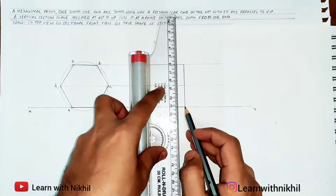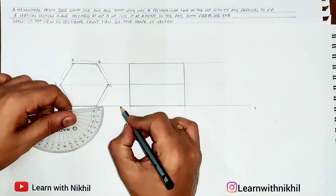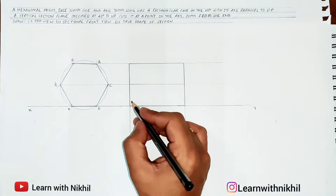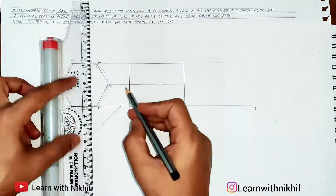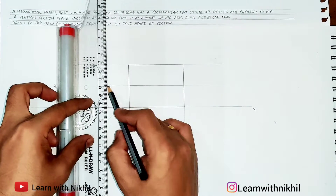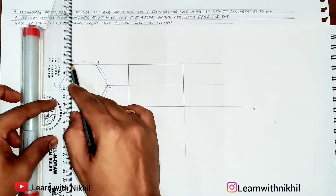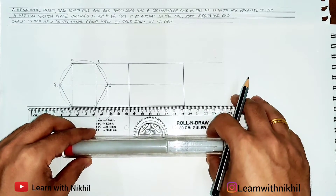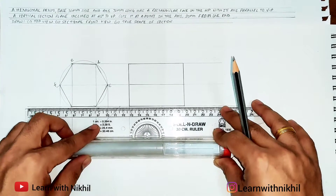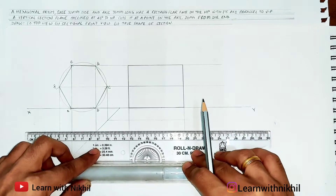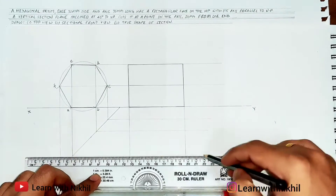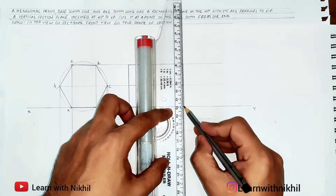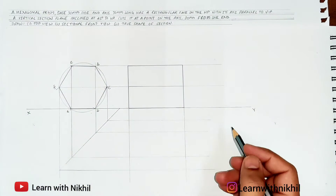Now drawing the top view: taking projections downward from the front view, and drawing a 45-degree angle line. Projections from the side view (hexagon) go to the 45-degree angle line, then from that line towards the top view. The top view of the prism will be a rectangle.